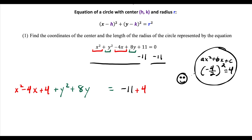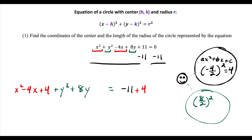Now we repeat this process for the y expression. The b term attached to y is 8, so we divide by 2 and square it: 4 squared gives us 16. So we add 16 to both sides.